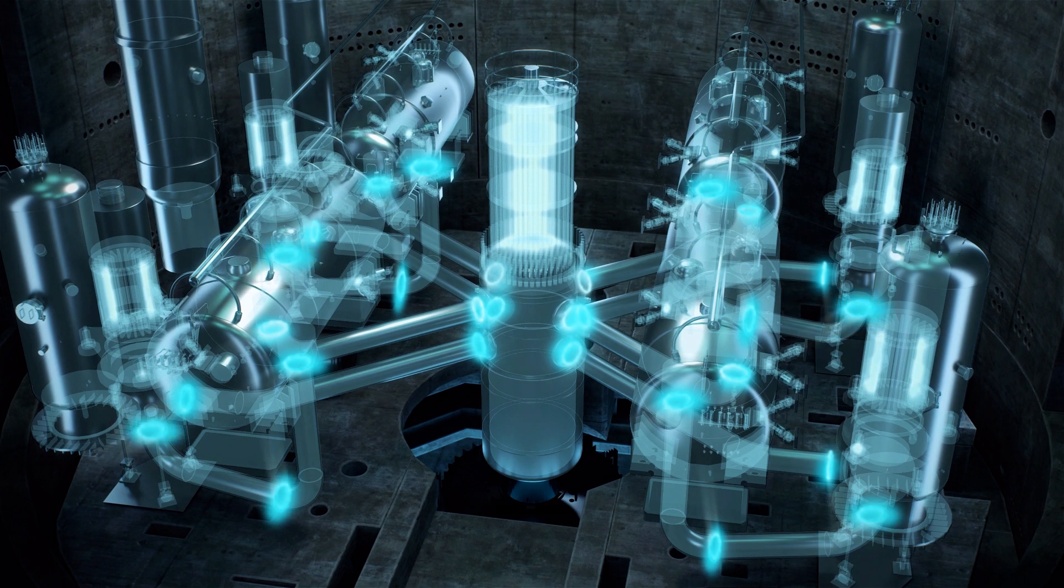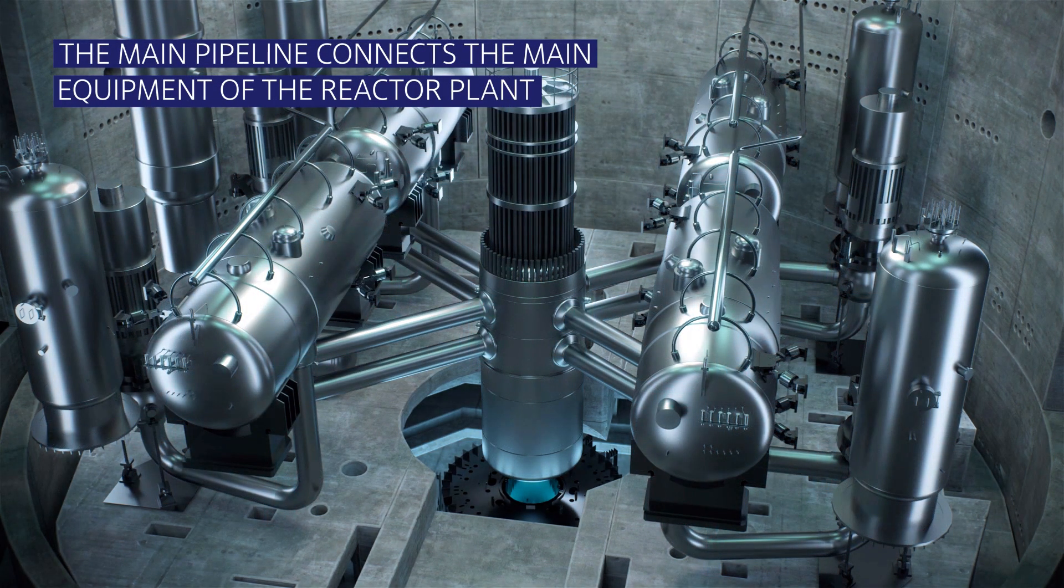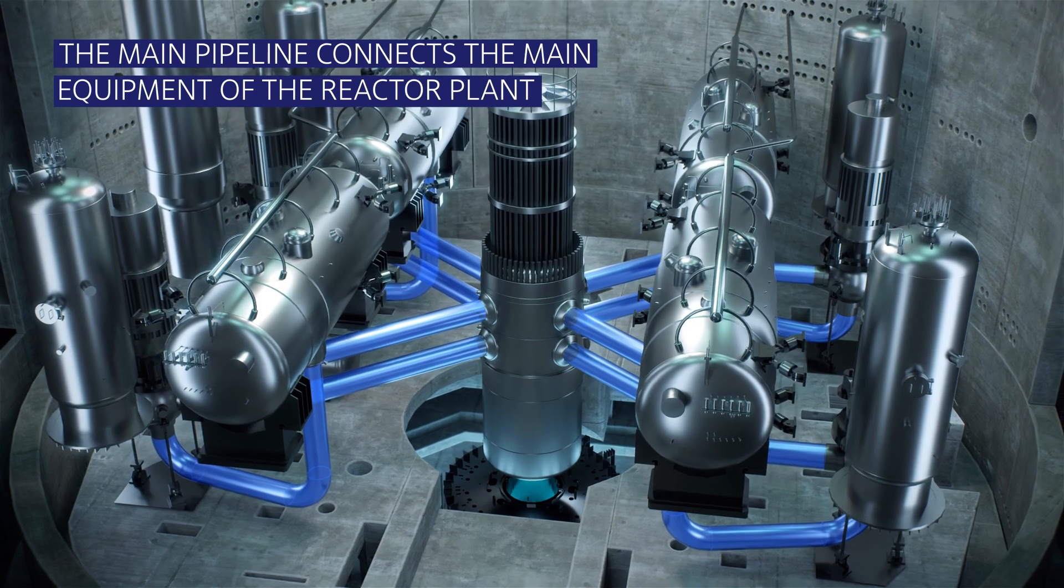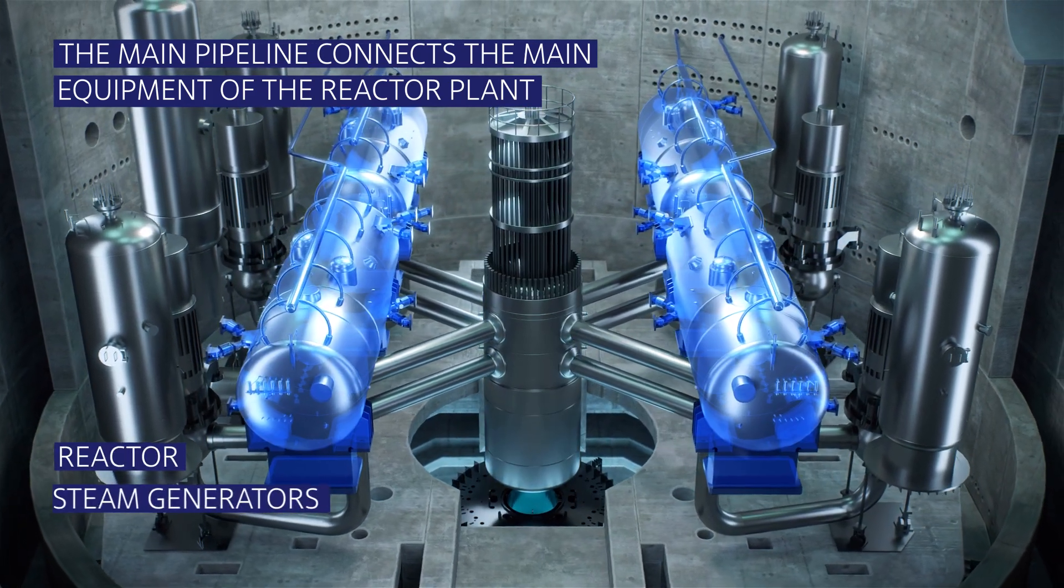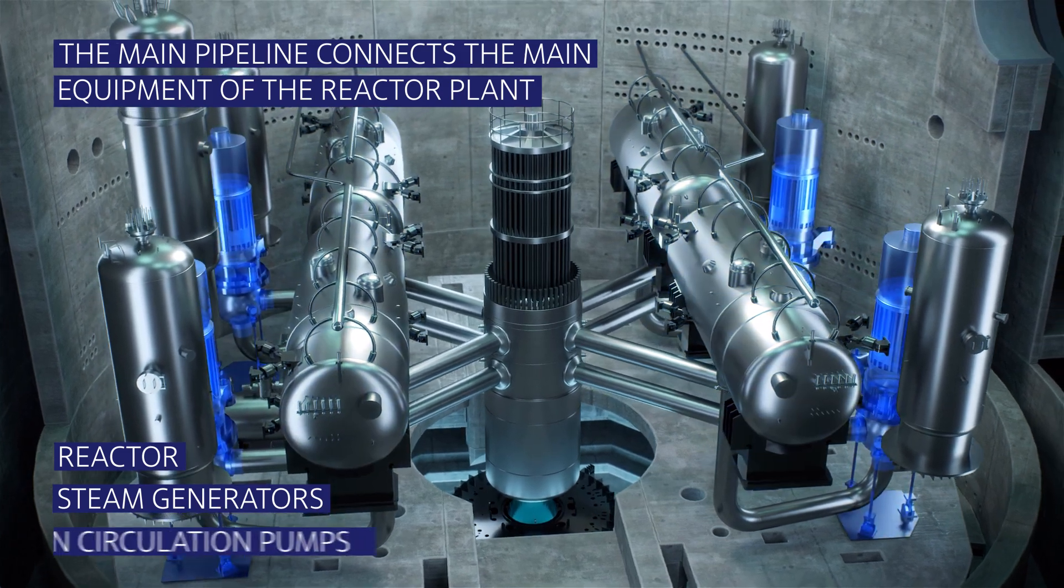The main circulation pipeline connects the main equipment of the reactor plant: the reactor, steam generators, and main circulation pumps.